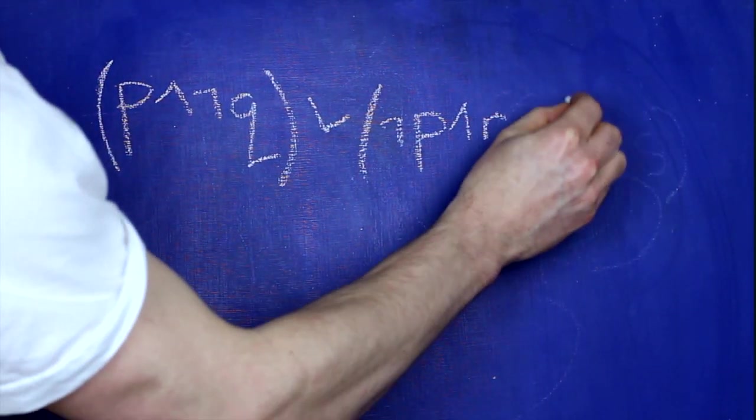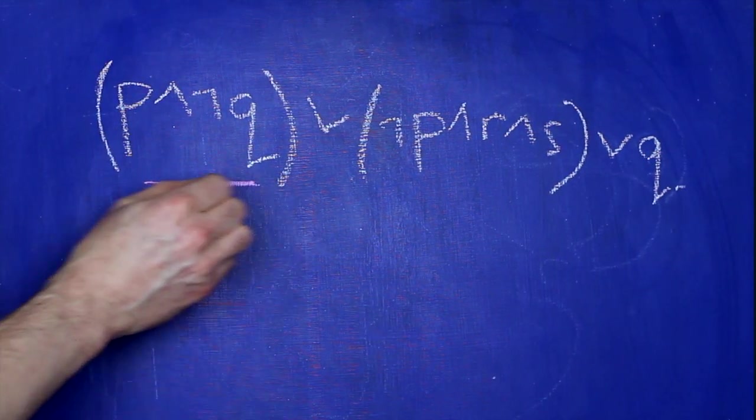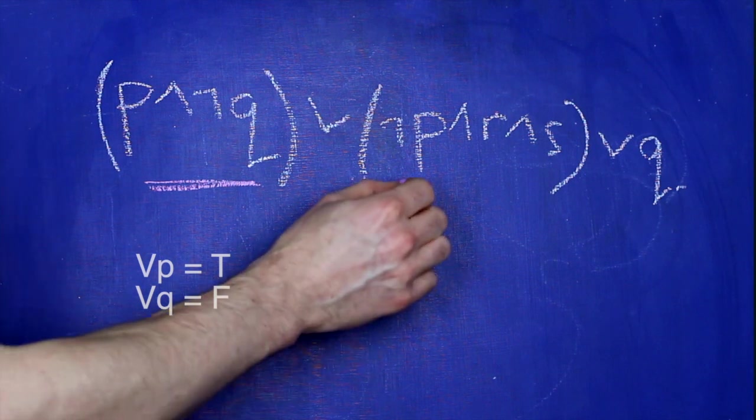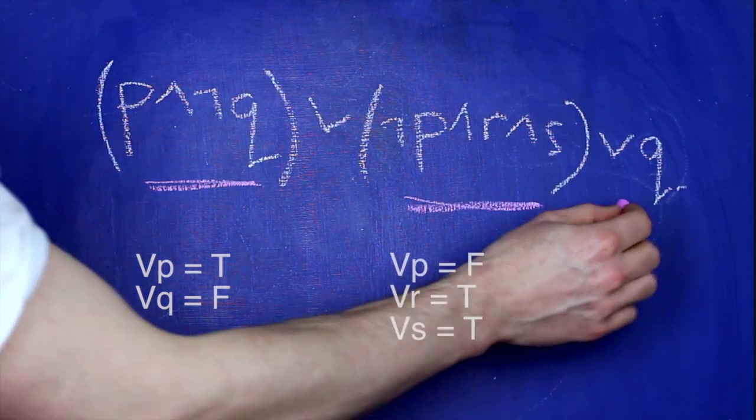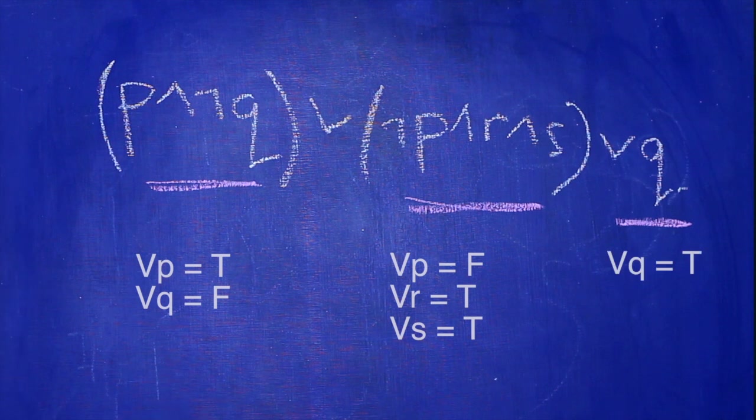Why are we interested in disjunctive normal forms? Each disjunct corresponds to a valuation that makes that sentence true. Have a look at this sentence here in disjunctive normal form. The first disjunct gives us this valuation. The second disjunct gives us this valuation. And the third disjunct gives us this valuation. So there we have a bunch of valuations. If we draw the truth table for this sentence, we'll see that every line that makes the whole sentence true corresponds to one of the valuations that we just read off.